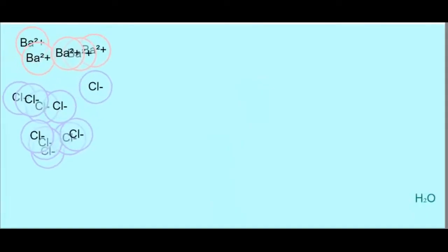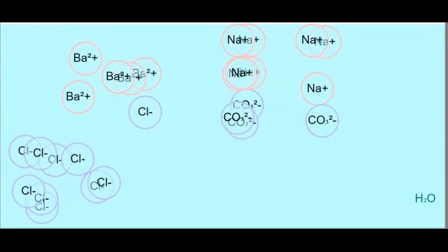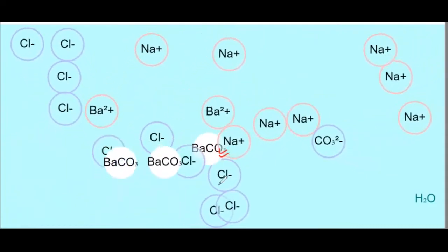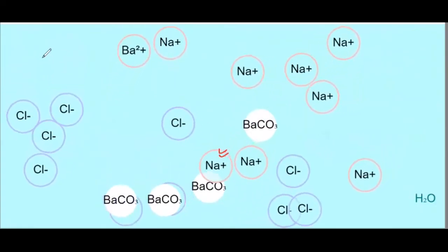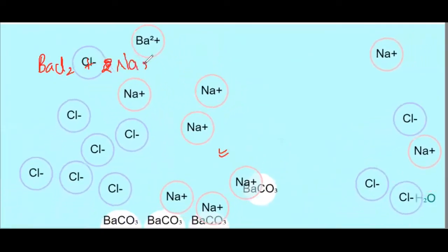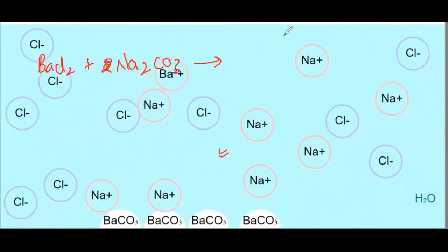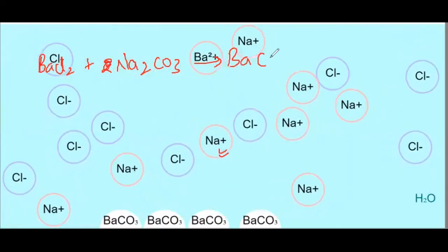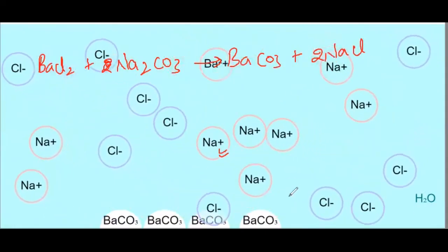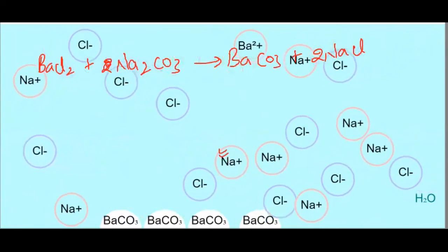Next reaction again barium chloride के साथ है, but this time we are using sodium carbonate। जब barium ion, carbonate के साथ react करता है, तो barium carbonate बनता है which is a white precipitate that gets settled down at the bottom। Reaction: BaCl2 + Na2CO3 → BaCO3 + 2NaCl। Sodium ion और chloride ion solution में available हैं।